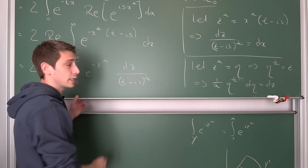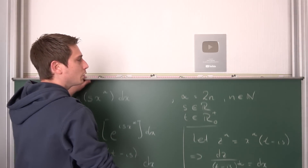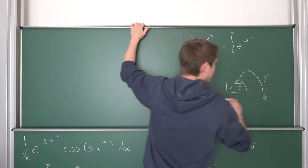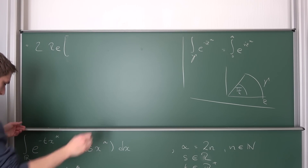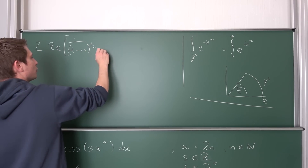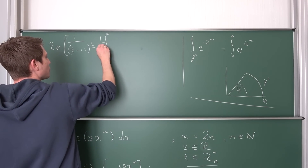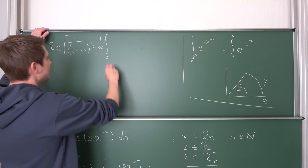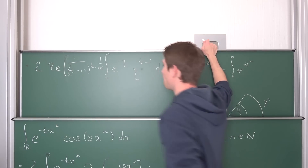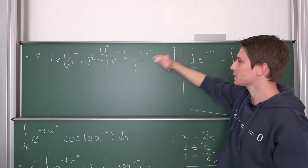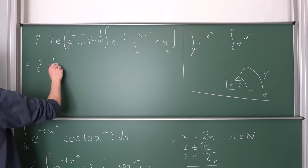Now we can plug everything in and see what we get. If we let z go to zero, eta goes to zero; if we let z approach infinity, eta also goes to infinity. This is equal to two times the real part of one over (t minus i·s) to the one over alpha, times the integral from zero to infinity of one over alpha — brought to the front since it's not dependent on our variable of integration eta — times e to the negative eta, times eta to the one over alpha minus one, d eta.